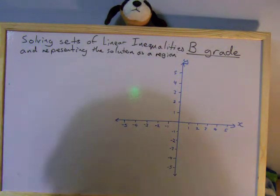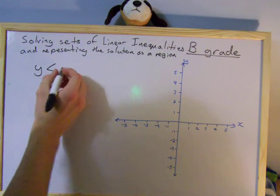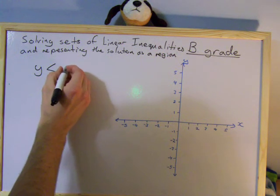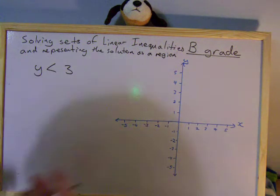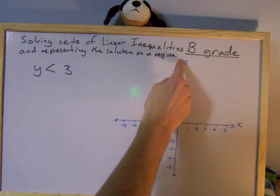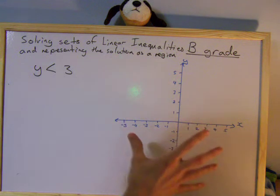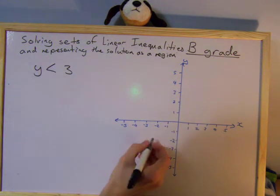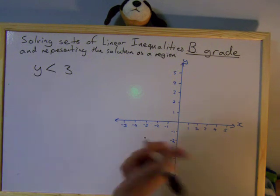A quick example. The case where y is less than 3. How do I represent that? Here's my y-axis. Any point is okay as long as y is less than 3. So that point there, y equals minus 2, so that's okay.